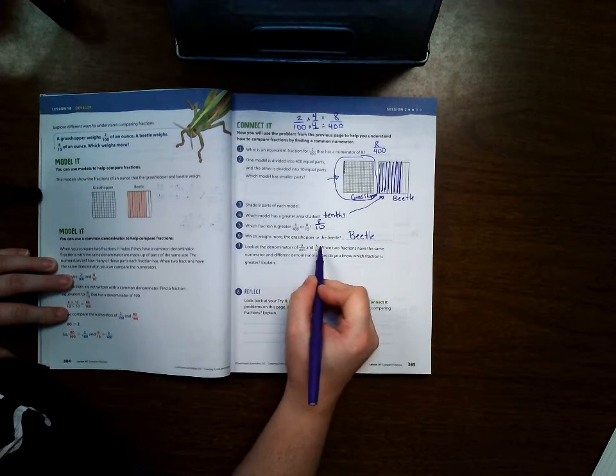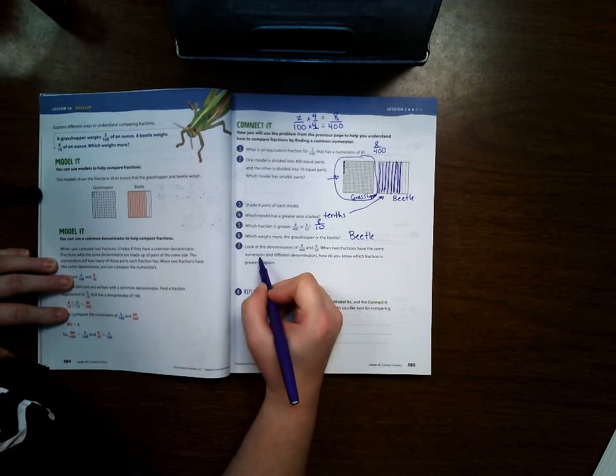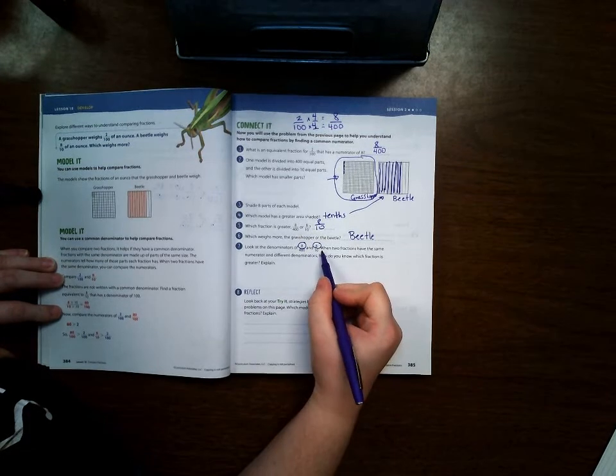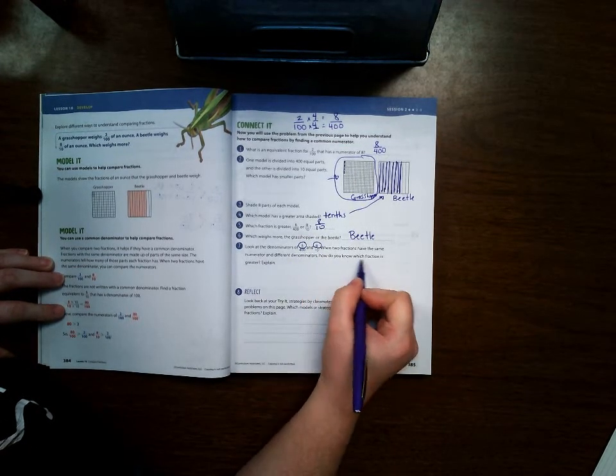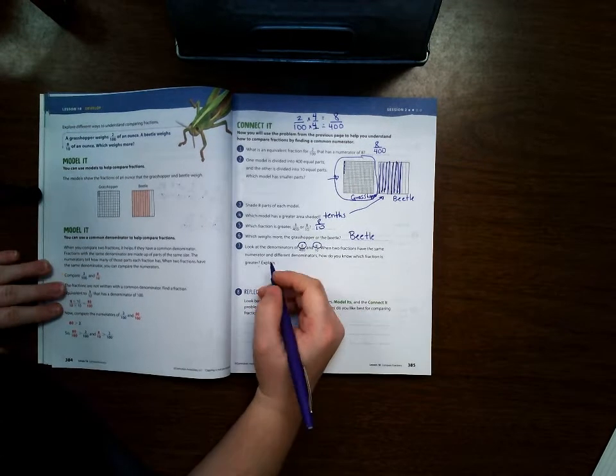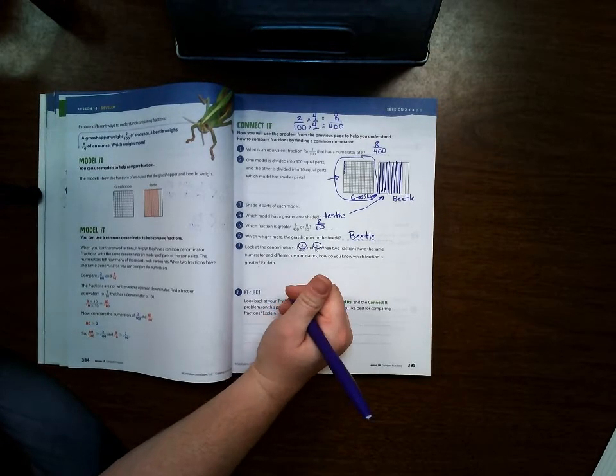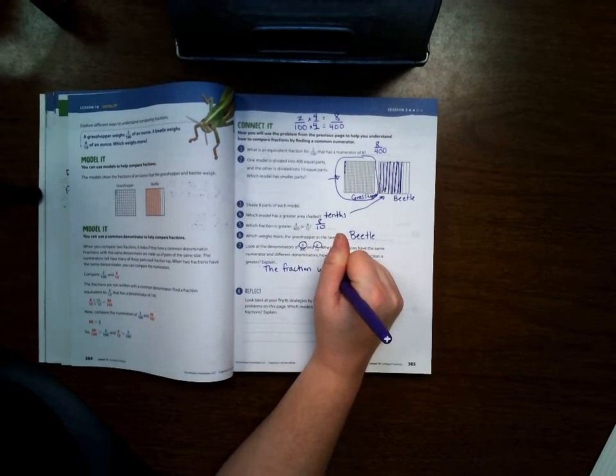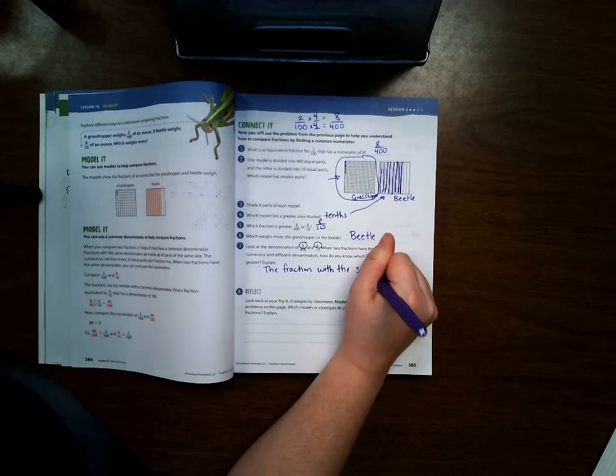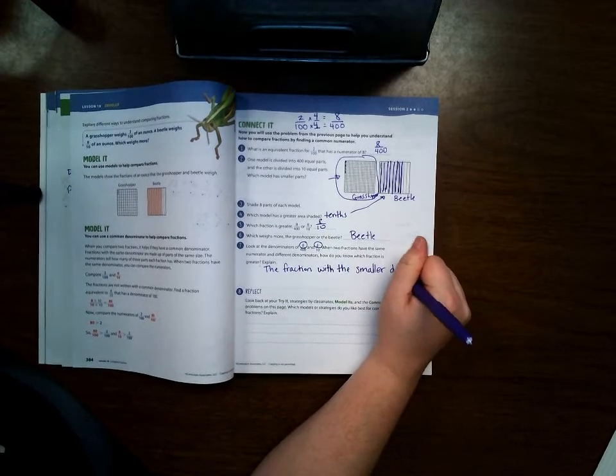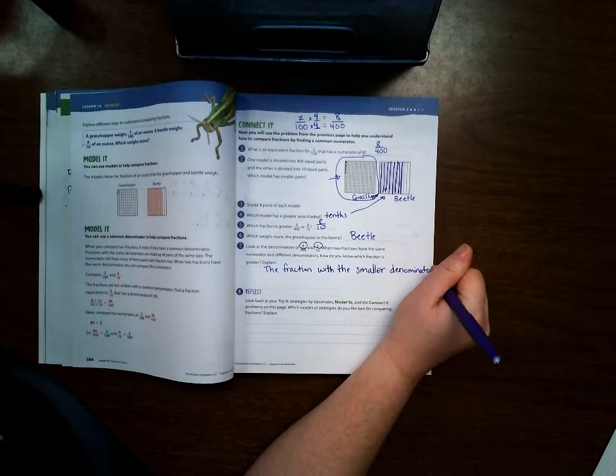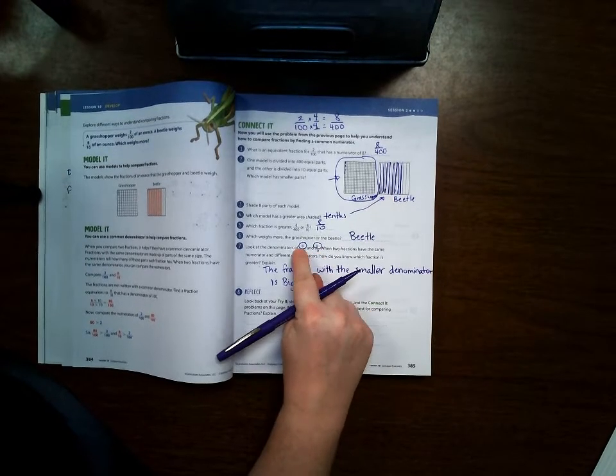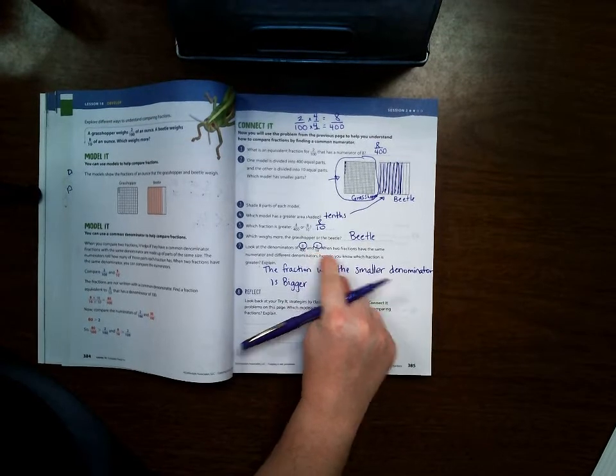Look at the denominators of 8/400 and 8/10. When two fractions have the same numerator, see how they made it the same numerator? We did denominator on the first page but right here they're doing numerator. But different denominators, how do you know which fraction is greater? The way you know which fraction is greater is the fraction with the smaller denominator is bigger. So 8/10 is bigger because if the numbers on the top are the same, 10 is smaller so it's the bigger number.